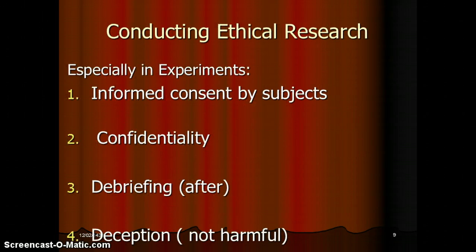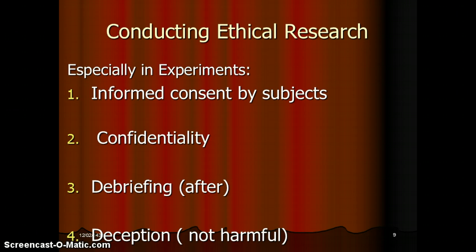Now, conducting ethical research. When doing research, being ethical means not being biased, especially in experiments. Number one: informed consent by subjects — when experimenting on someone, you ask for their permission. Confidentiality means you won't share the information with anyone else. Debriefing means you give participants the information afterwards. Deception must not be harmful.